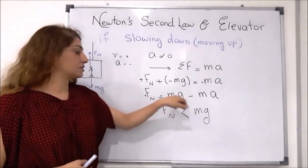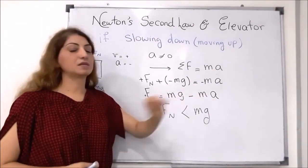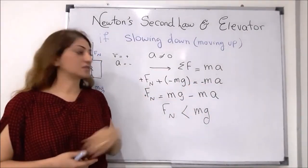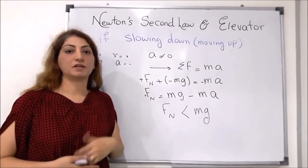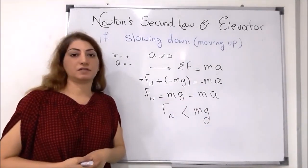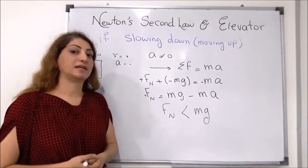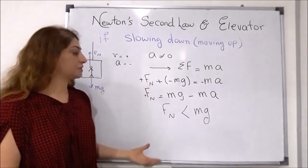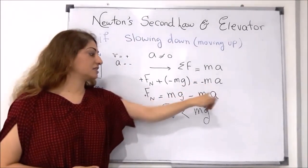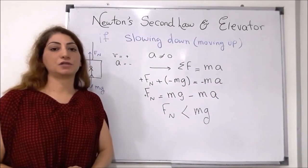Because we have normal force equals mass times gravity — the weight of the person — minus mass times acceleration. The sign of the acceleration here is negative because you are decelerating. If it were accelerating or speeding up, the sign would be positive and the normal force would be much greater than the weight of the person. But here, because there is deceleration, the acceleration is negative, so the normal force becomes smaller than the weight of the object in the elevator.